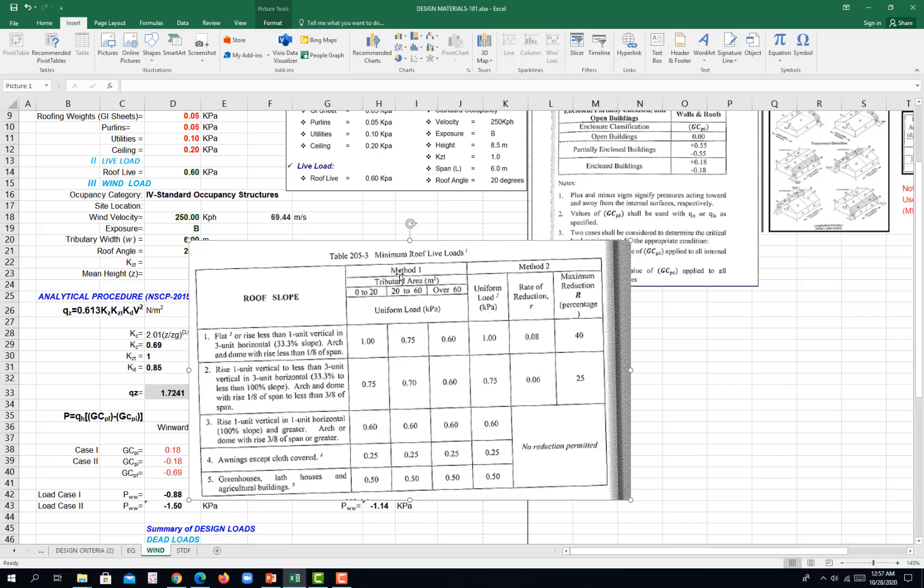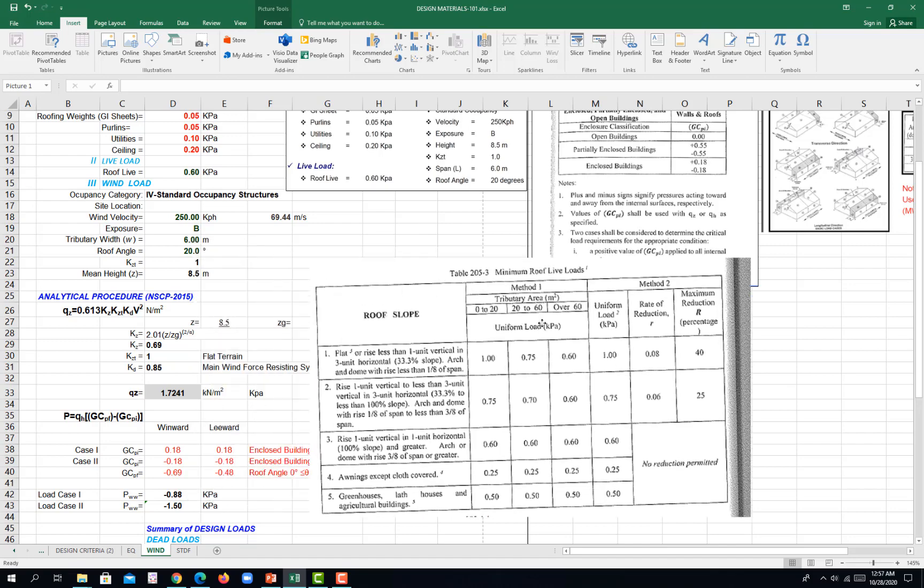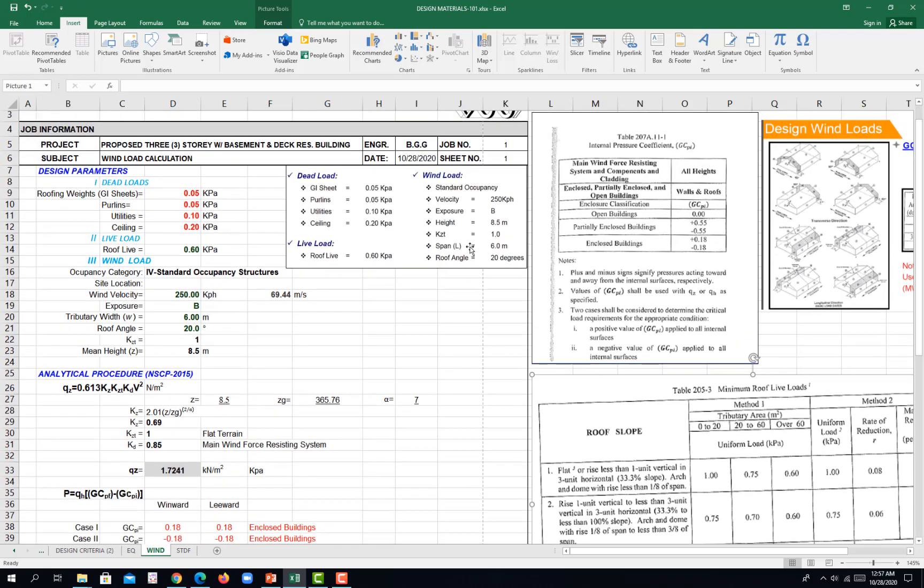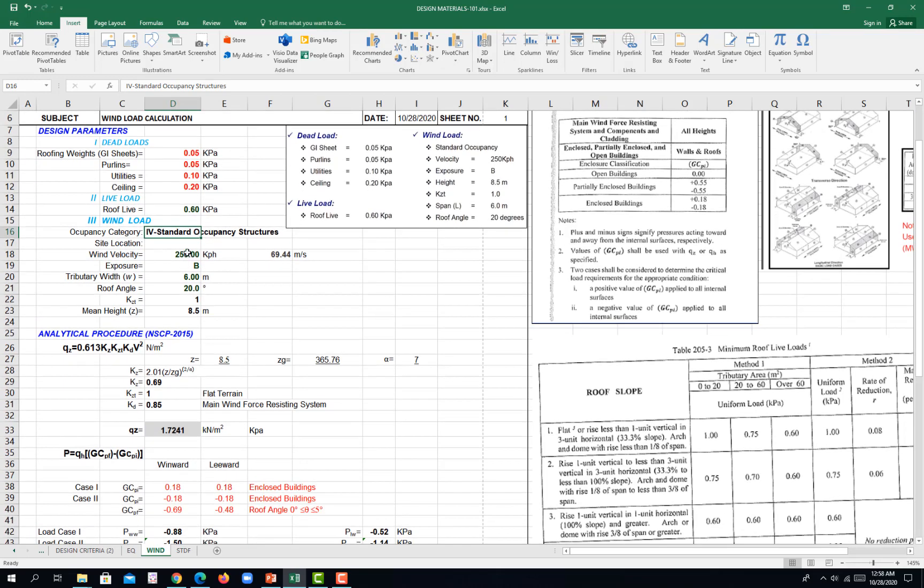So you have your dead loads, those are attached to your top chord, to your bottom chord, your live load. I'm using table 205, the minimum roof live loads. If by method 1 you have a tributary area from 0 to 20, then you have these values depending on the slope of your roof.